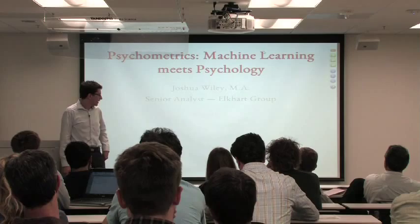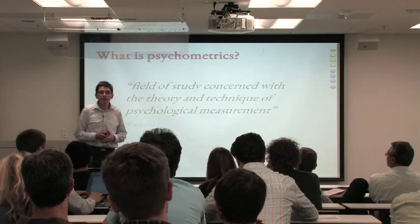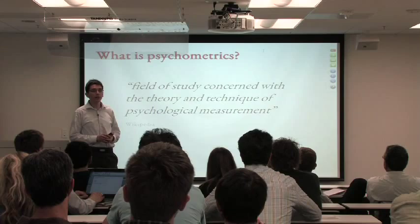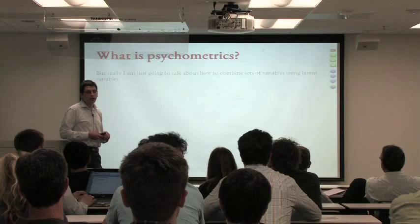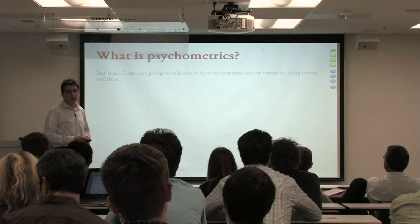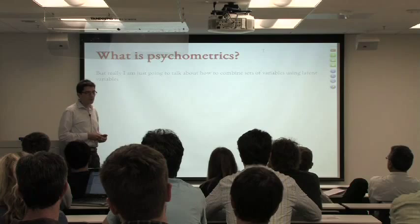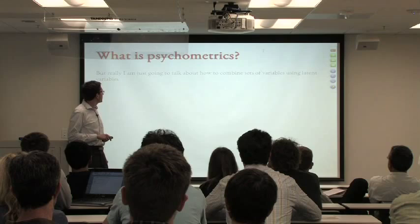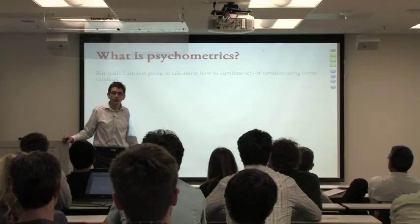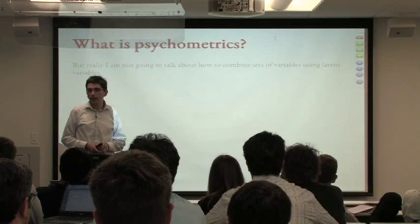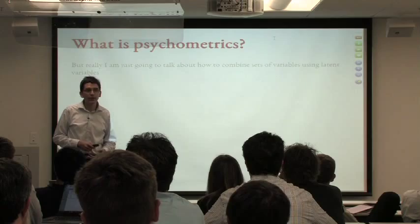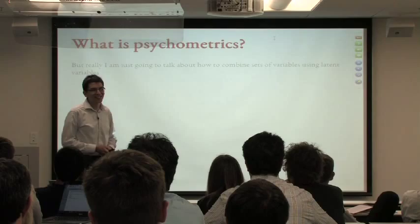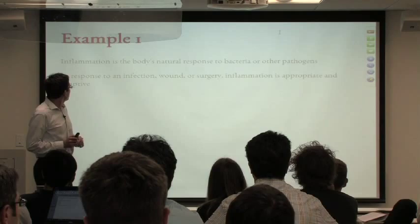I'm talking about psychometrics today. The definition from Wikipedia says it's concerned with the theory and study of measures. But what I'm going to talk about is how you combine sets of variables using latent variables — how you can take higher-dimensional data and reduce it down to some subset, particularly when you have reason to believe that groups of things would go together. I'll start with Bayesian models because they're more fun, and then for my frequentists I'll show that too.